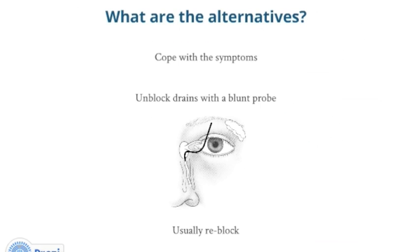Are there any alternatives to DCR? The first option is to cope with the watering and hope the infections clear with antibiotics. Sometimes the blockage can be overcome with a blunt probe like a pipe cleaner, but it tends to re-block. To discourage this, small rubber tubes are sometimes left in place for a couple of months, but they often re-block when removed.